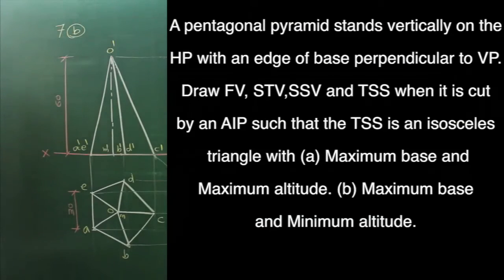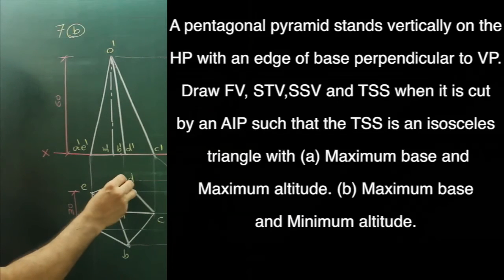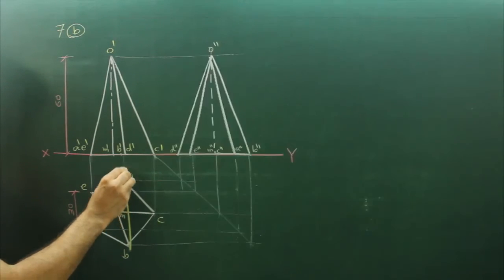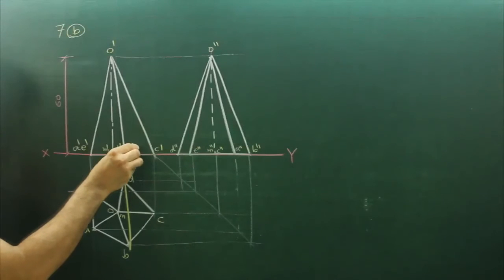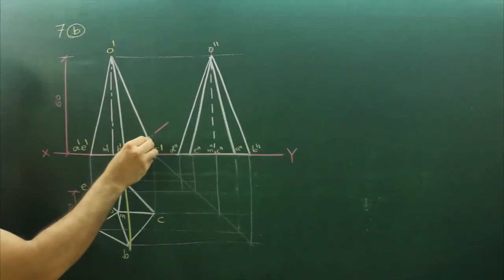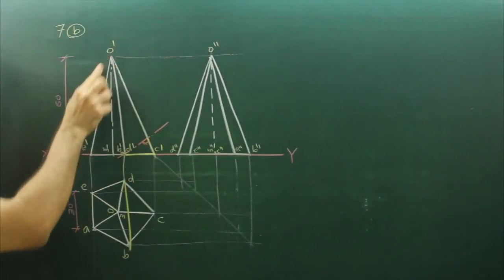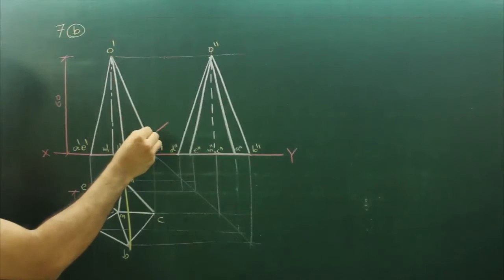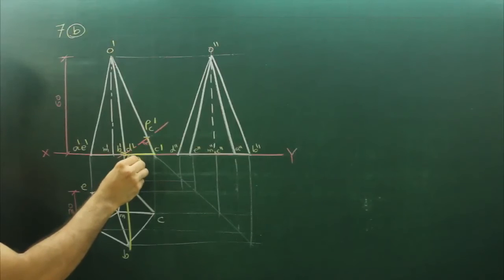Now we need to cut the AIP such that the TSS is an isosceles triangle with maximum base and minimum altitude. Again maximum base is obtained in the top view over here. For minimum altitude, we draw a perpendicular from here — this will be the perpendicular. This much will be the remaining portion and this entire part will go away. This point will be PC-dash, this is PU-dash, and PV-dash.